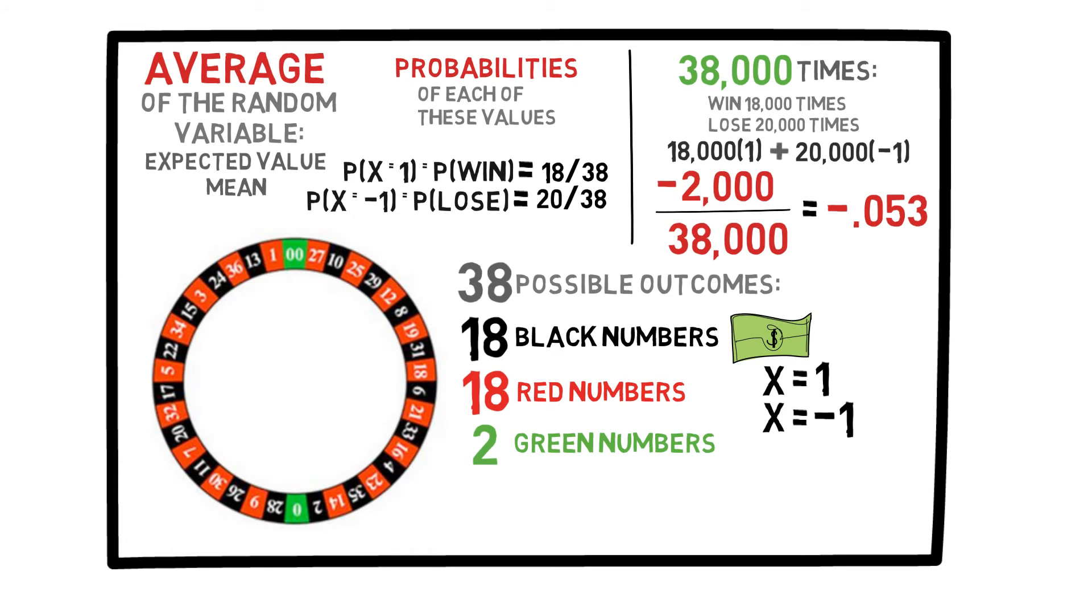This means that for every game you bet $1 on, you would, on average, lose 5.3 cents. This demonstrates the concept of the expected value of this random variable. In probability theory, we would write this as the expected value of x is equal to minus 5.3 cents or minus 0.053 dollars.